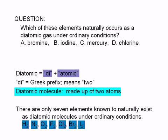Note that we are referring to these elements as they occur in nature. We indicate a subscript of two next to the symbol for the element. Obviously, mercury is not the correct answer.